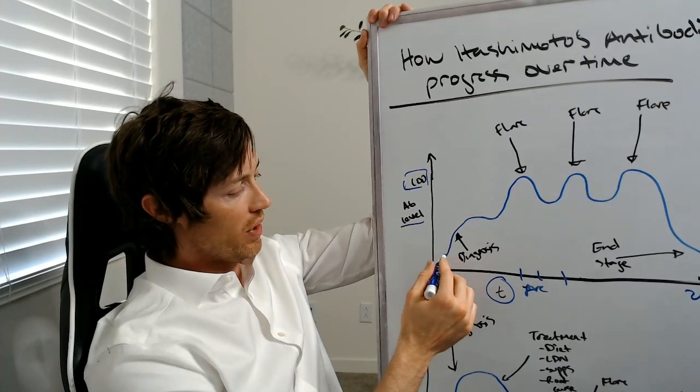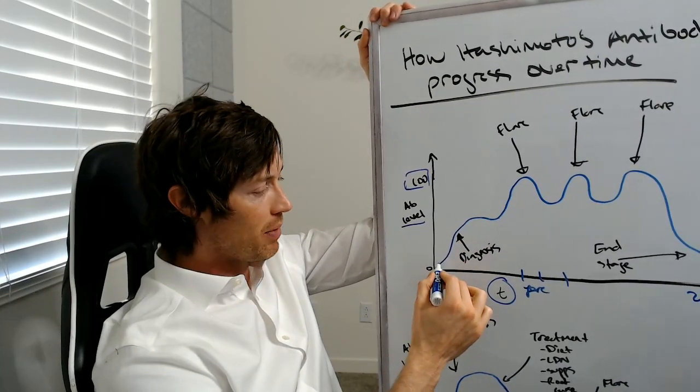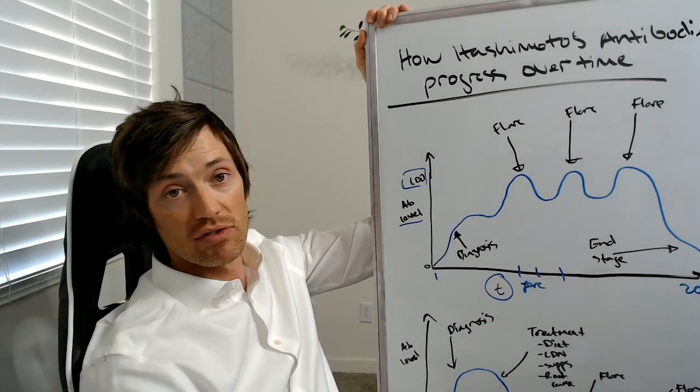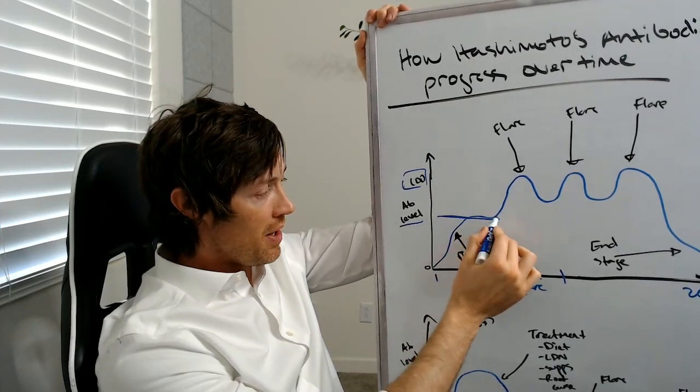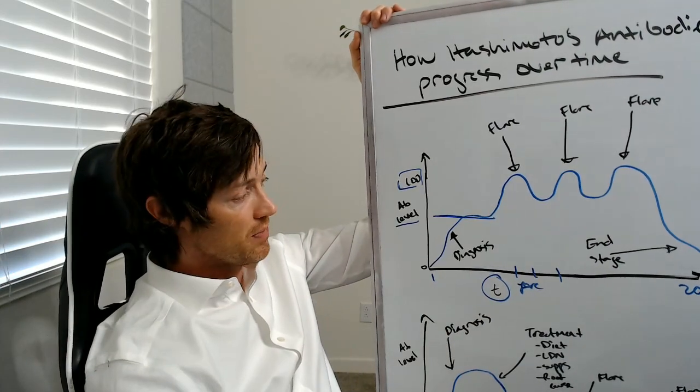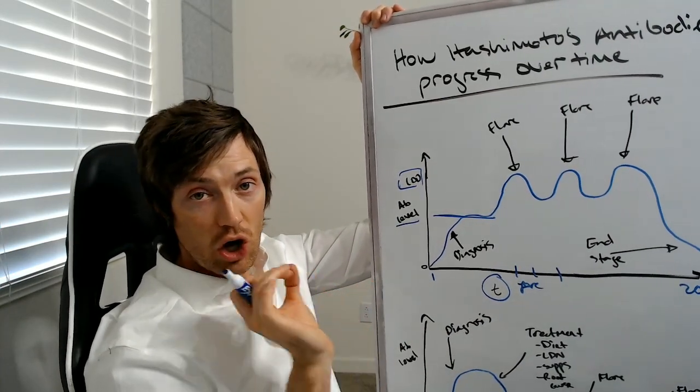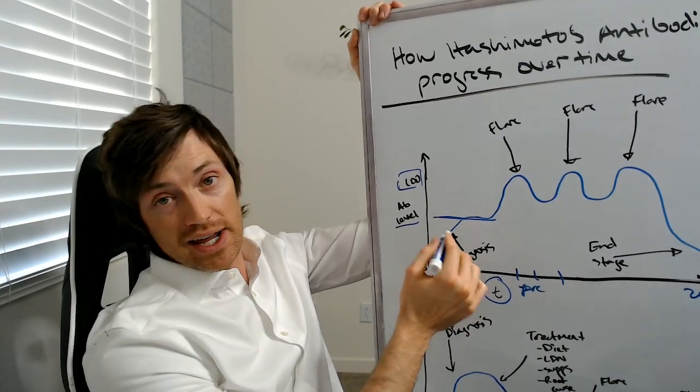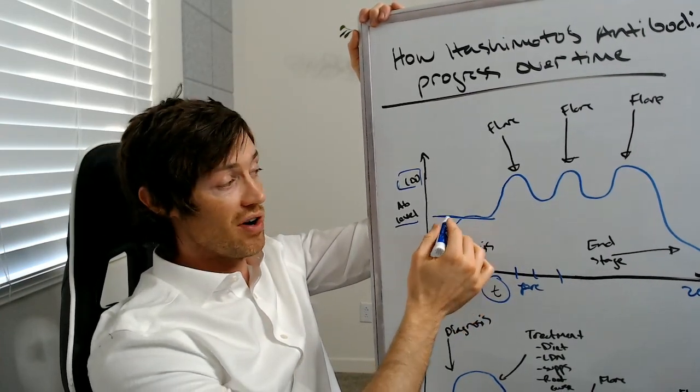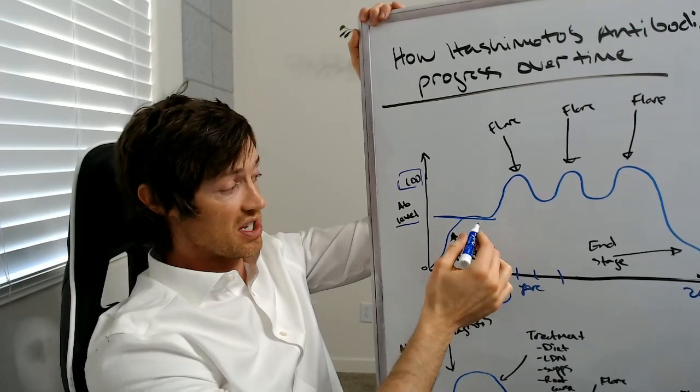Now what I have shown here is over time, the antibodies spike up initially. And this is the time of diagnosis. Usually at the time of diagnosis, the antibodies will spike up, but they may not reach their highest level. Just whatever inciting event causes Hashimoto's will cause those antibodies to spike up initially. Now you may or may not be diagnosed here because a lot of people feel kind of crummy, but they don't feel crummy enough to actually obtain the diagnosis.